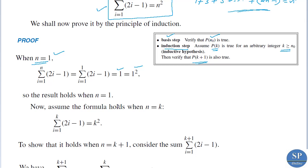Now assume that the formula holds for n equals k. That is, we have summation i from 1 to k of (2i minus 1) equals k squared. We are assuming that this is true — the formula is true for n equals k. Now, to apply mathematical induction, we have to prove that the formula is true for n equals k plus 1 also.